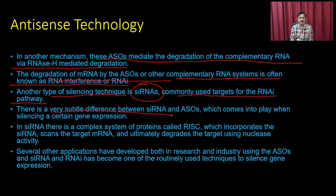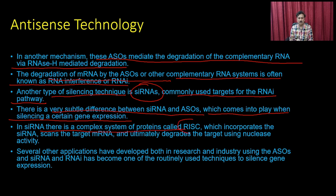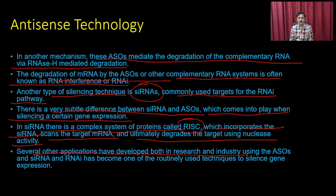The difference between siRNA and antisense oligonucleotide technology is that in siRNA, there is a complex system of proteins called RISC, which incorporates the siRNA, scans the target messenger RNA, and ultimately degrades it using nuclease activity. Several applications have been developed in both research and industry using antisense oligonucleotides and siRNA, which have become routinely used techniques to silence gene expression.